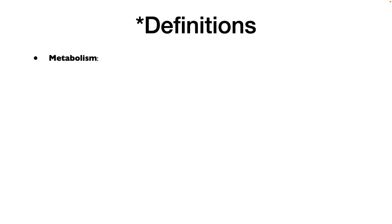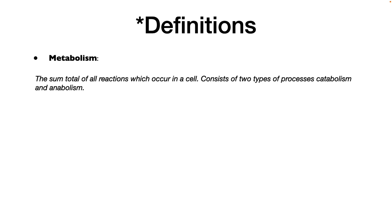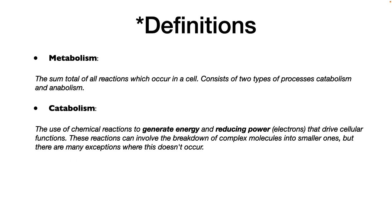Let's begin with some definitions. Metabolism is the sum total of all reactions which occur in a cell. It consists of two types of processes: catabolism and anabolism. Catabolism is the use of chemical reactions to generate energy and reducing power, which is basically high energy electrons, and this drives cellular functions. These reactions can involve the breakdown of complex molecules into smaller ones, but there are many exceptions where this doesn't occur but still generates energy.